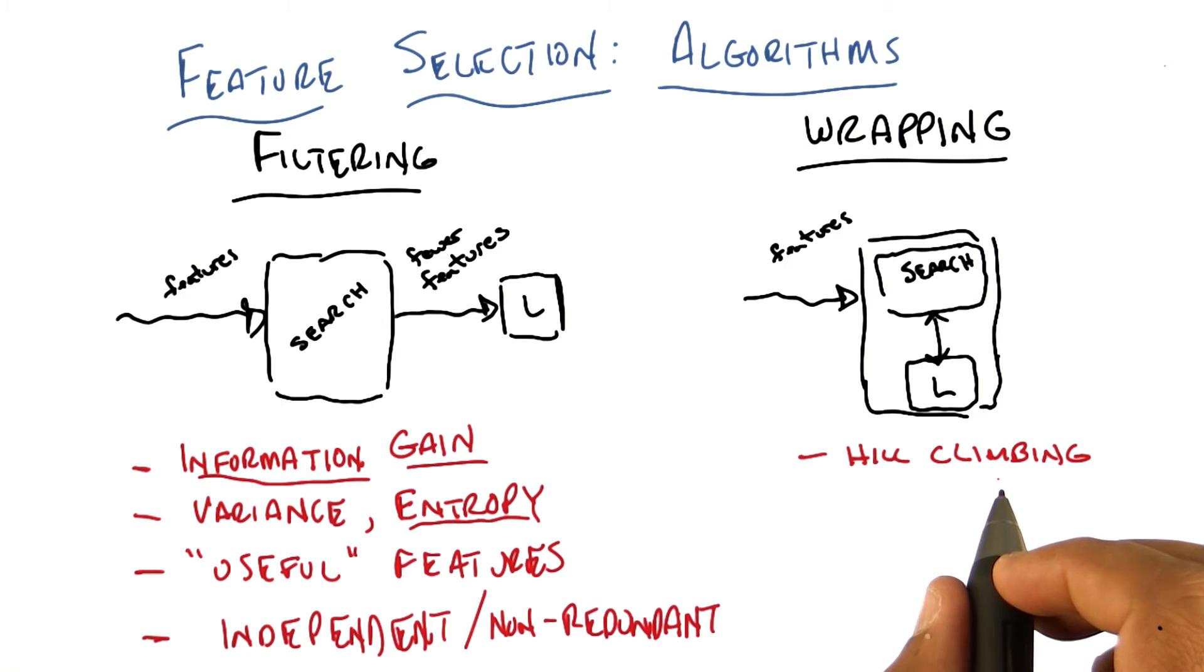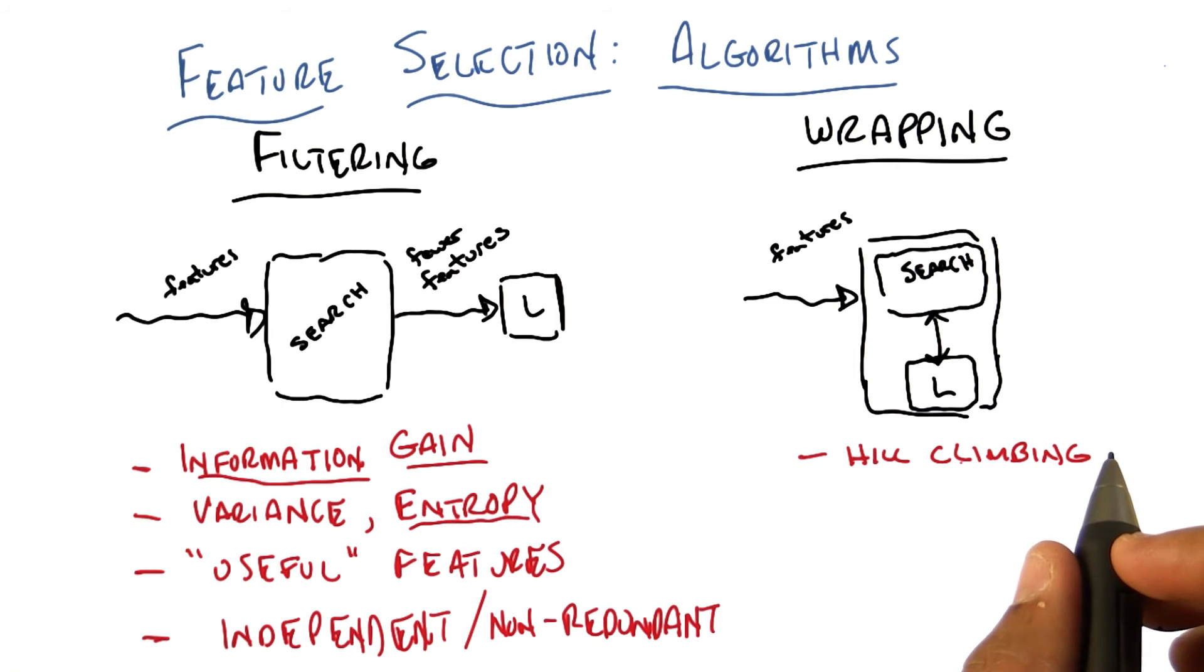Yeah, I mean, I guess I was thinking of something where the search algorithm does is it tells the learning algorithm, here's the features to try to use. The learning algorithm runs and it comes back with some kind of error, presumably on held out validation data, otherwise we run the risk of overfitting. Fair. And it gives a number back and then the search algorithm uses that to decide what subset to try next.